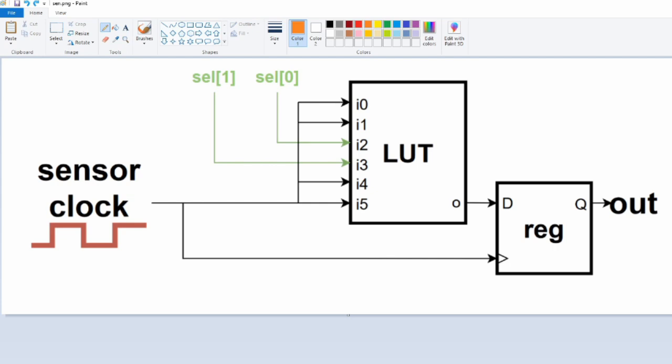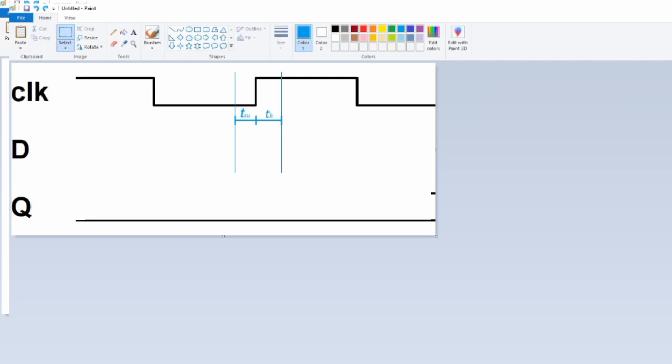Basically, if you have a clock signal go through two paths—one goes through a lookup table and then to the data input of a register, and the other goes to the clock input of the same register—on both paths there is a configurable delay line which is process, voltage, and temperature invariant.